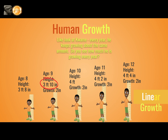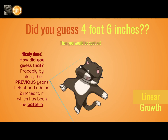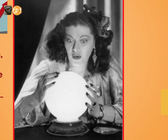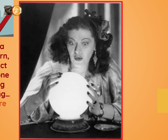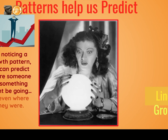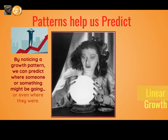Like, look at Kwame. Every year he keeps growing about the same amount. Do you see how much he's growing every year? Did you say two inches? Very good. Can you tell how much he might grow to by the time he's 13? Did you say four foot six? You are correct. Patterns help us predict. By noticing a growth pattern, we can predict where someone or something might be going or even where they were.